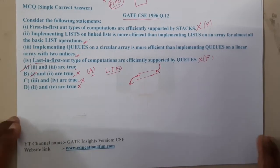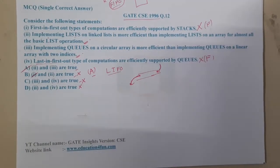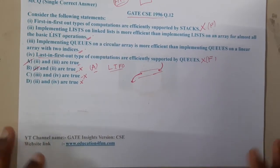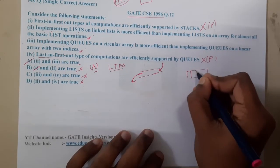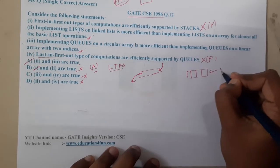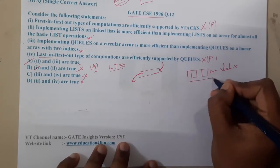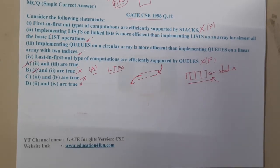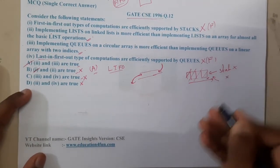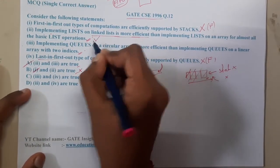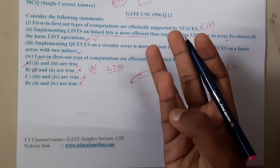Implementing lists on linked lists is more efficient than implementing lists on arrays. Most people prefer arrays, but the major disadvantage of arrays is that they are static. When the array is full and you need to insert a new element, you must increase the size and re-insert every element. Hence, array implementation is not ideal, whereas a linked list is more efficient for insertion, deletion, and searching.